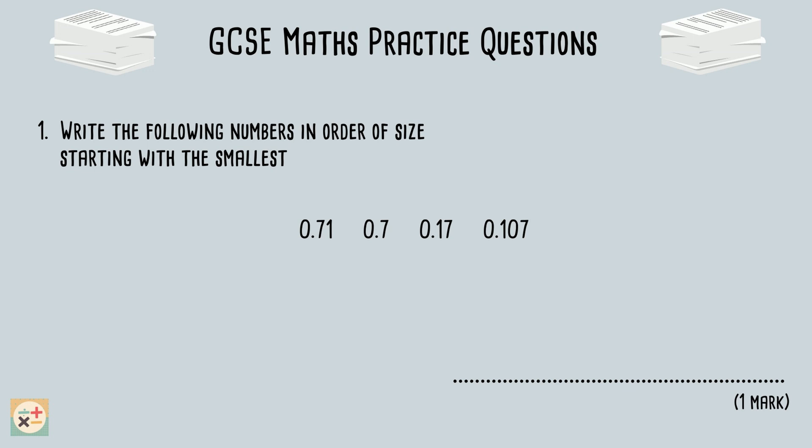Question 1 asks us to write these numbers in order, starting with the smallest. If you need a refresher on ordering decimals, see our video linked above. Let's compare each digit from left to right. The first digit of each of these numbers is equal, so we can move on to the first digit after the decimal point.